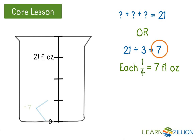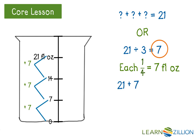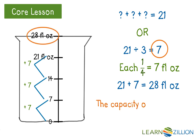Let's check it and make sure it works. Zero plus seven gets me to seven. Seven plus seven takes me to 14, and adding one more group of seven gets us to 21 fluid ounces — and we know that's how much was filled at three-fourths of the way. Since I know each fourth is seven ounces, I can take the original 21 and add the last fourth — another group of seven fluid ounces — to get a total capacity of 28 fluid ounces. So the capacity of the beaker is 28 fluid ounces.